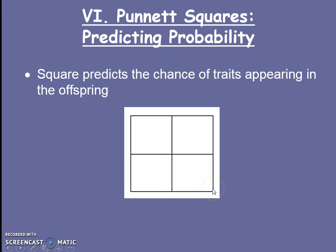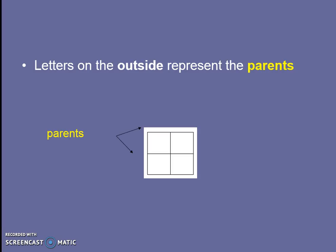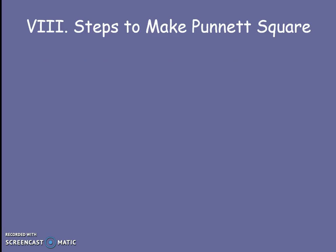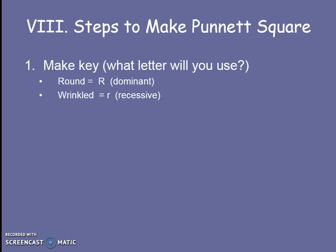A Punnett square is a two-by-two box that predicts the chance of having different traits in our offspring. The parents are always on the outside of the box, and the offspring are the four boxes on the inside. We're going to be doing tons of Punnett squares in class. Here are the steps: the first thing is we always decide what trait we're looking at and what letters we're going to use to represent the two different alleles. We make a key and write out what each thing represents. We have to be very detailed and step by step like math class, otherwise when things get more complicated, we will make mistakes.